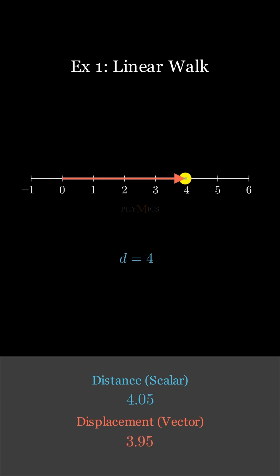Now, as the object takes two steps behind, the distance of the object increases by two and becomes six, whereas the displacement, being the shortest distance, now reduces to two.